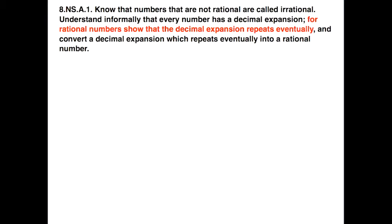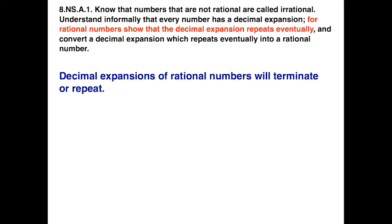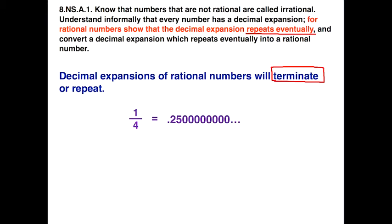Now let's look at this statement in the standard: for rational numbers, show that the decimal expansion repeats eventually. For rational numbers, the decimal expansions will terminate or repeat. There's a little bit of confusion here — the standard says rational numbers will repeat eventually, but that seems to contradict the idea of terminate. The way to interpret that: 1/4 is 0.25, but we can add zeros infinitely, so in a sense, zero is our repeating digit. When the standard says repeats eventually, it is possible for it to terminate if that repeating digit is a zero.